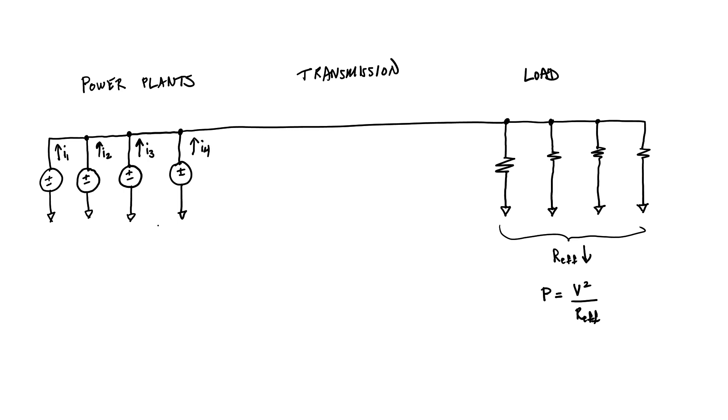If all of the power plants are operating at the same voltage, then we can see that the power coming out of power plant one is proportional to the current.